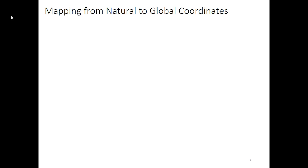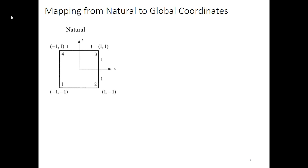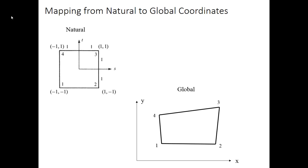Now let's talk about how we map from that natural coordinate system over to our global XY coordinate system. We start out in the natural system with this basic 2×2 square element, and what we want to do is map to a global system where we have an element that looks different — some nodes assigned to the corners but no longer a square shape. What we're trying to do is relate these two shapes so we can do things in the natural coordinate system that are consistent between every element, while the properties remain relevant in the global.